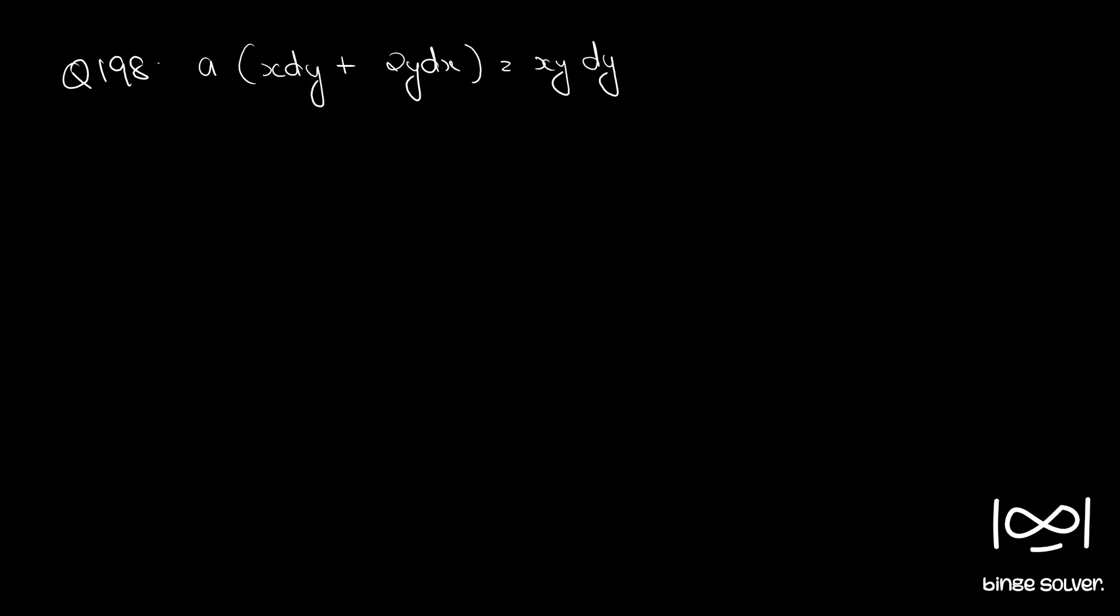Question number 198: a into x dy plus 2y dx is equal to xy dy. Let's first write in M dx plus N dy form.